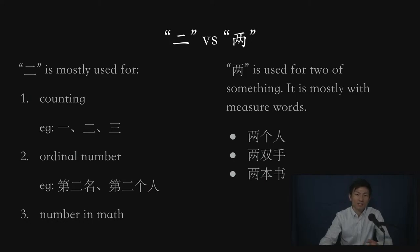And for 两, it is used for two of something. As a previous example, we have 两个人, that is two people. 两双手, for example, two of the hands. 两本书, two of those books. It's two of something, and it is mostly used with measure words because you're counting items, two of something.